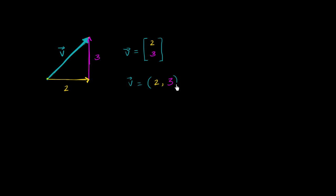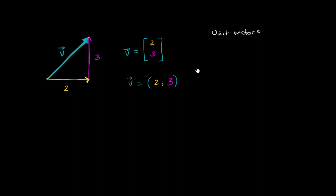What I now want to introduce you to — and we could come up with other ways of representing this 2-tuple — is another notation. This really comes out of the idea of what it means to add and scale vectors. To do that, we're going to define what we call unit vectors. If we're in two dimensions, we define a unit vector for each of the dimensions we're operating in. If we're in three dimensions, we define a unit vector for each of the three dimensions.